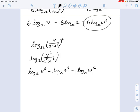Which then individually, you can bring all these exponents in front to make this 6 log base omega of v, minus 6 log base omega of a, minus 12 log base omega of w.